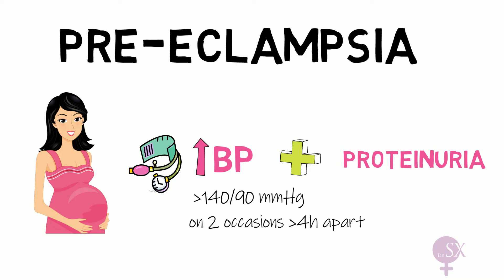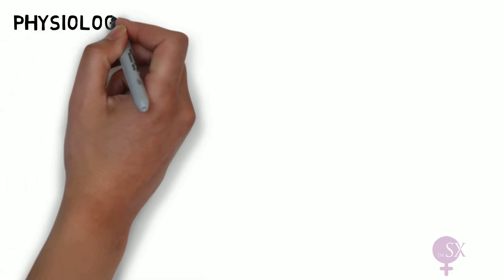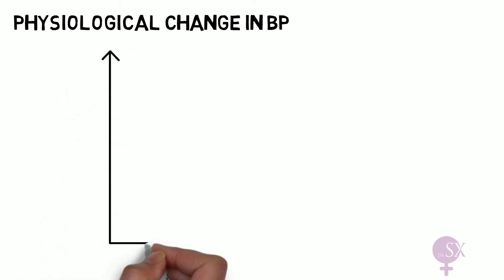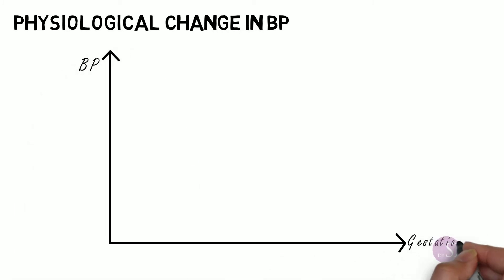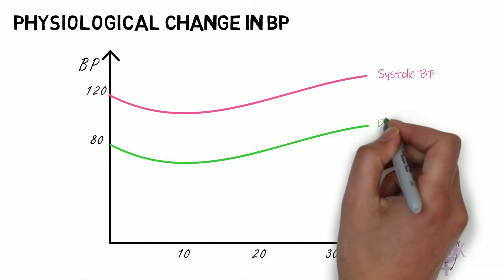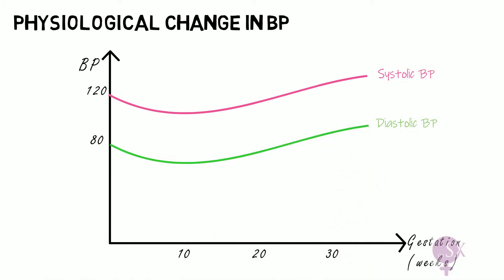Before we go into the details of this disorder, we need to understand the blood pressure changes during pregnancy. In a normal pregnancy there is a physiological change in blood pressure, as shown in this graph with blood pressure plotted against gestation in weeks. We can see the systolic and diastolic blood pressure dip to a minimum sometime during the second trimester, then return to normal levels by the end of the third trimester.